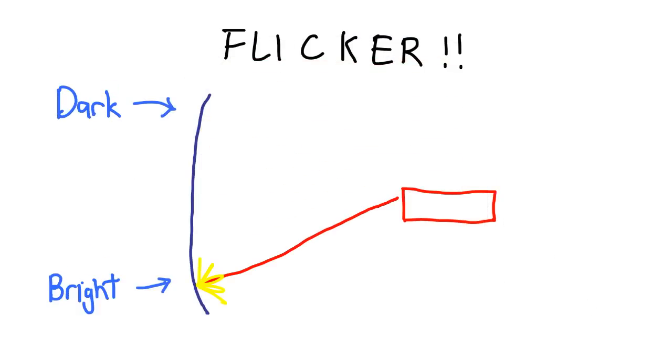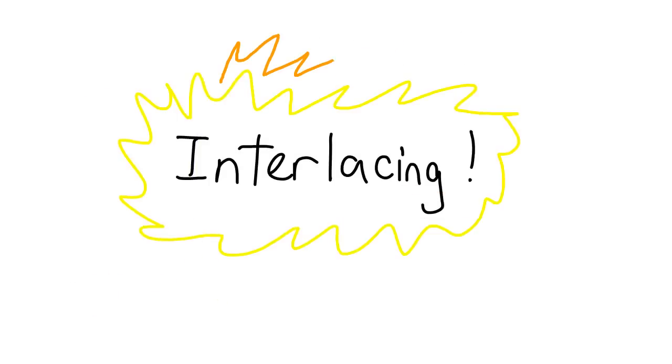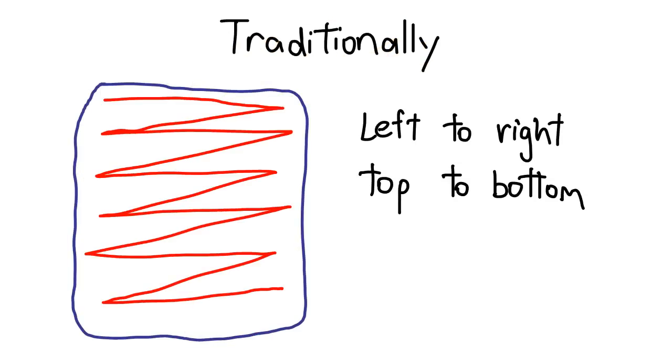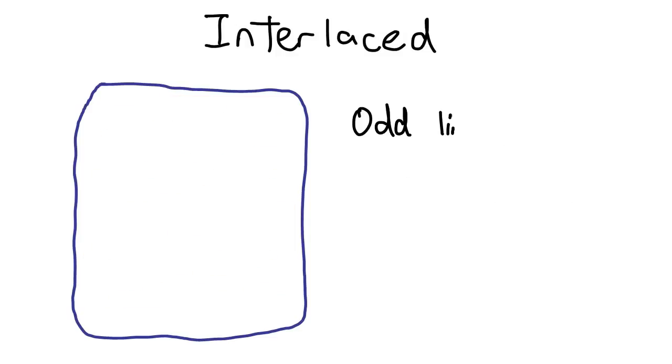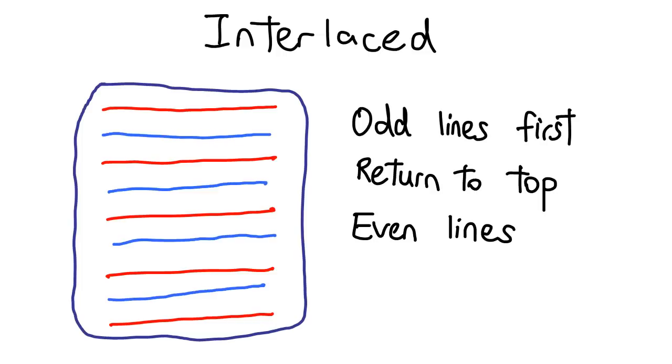The solution to this turned out to be interlacing. Instead of scanning all lines from top to bottom creating a complete frame, the electron gun was configured to scan all of the even lines from top to bottom, creating what's known as a field, then to go back up and fill in the odd lines, creating a second field.